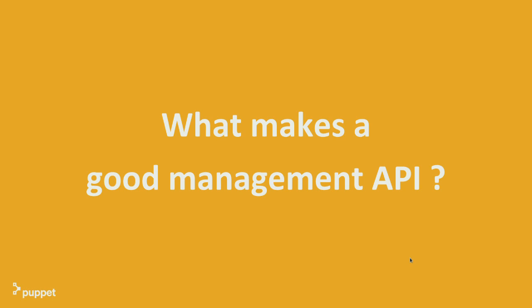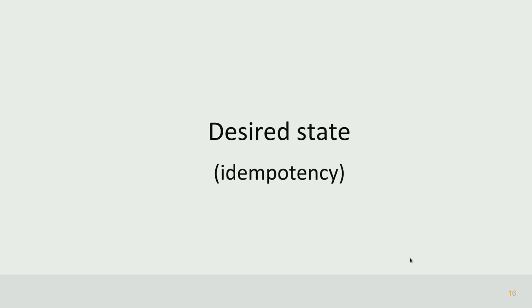So what makes a good management API? The first attribute — probably not controversial anymore — is that the API should work in terms of desired state. Instead of saying 'change the shell of this user,' you say 'make sure the shell of this user is X.' The important thing that happens when you reformulate it that way is you push all the logic of checking whether something is set to a certain value into the management layer. You don't have to do it yourself anymore. And you kind of get idempotency for free — the idea that if you do the same thing twice, the second time nothing happens.